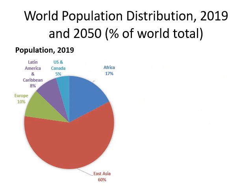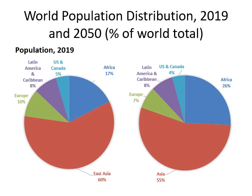Looking at it as a percentage: right now Asia is about 60% of the world's population, Europe is about 10%, Africa is about 17%, and so on. We're going to see some shifting of these percentages — if you grow slower than everybody else, you get smaller as a percent, and if you grow faster, you get bigger. Africa is going to become a much bigger percentage of the world's population, while Europe and the US are going to get smaller compared to the world.